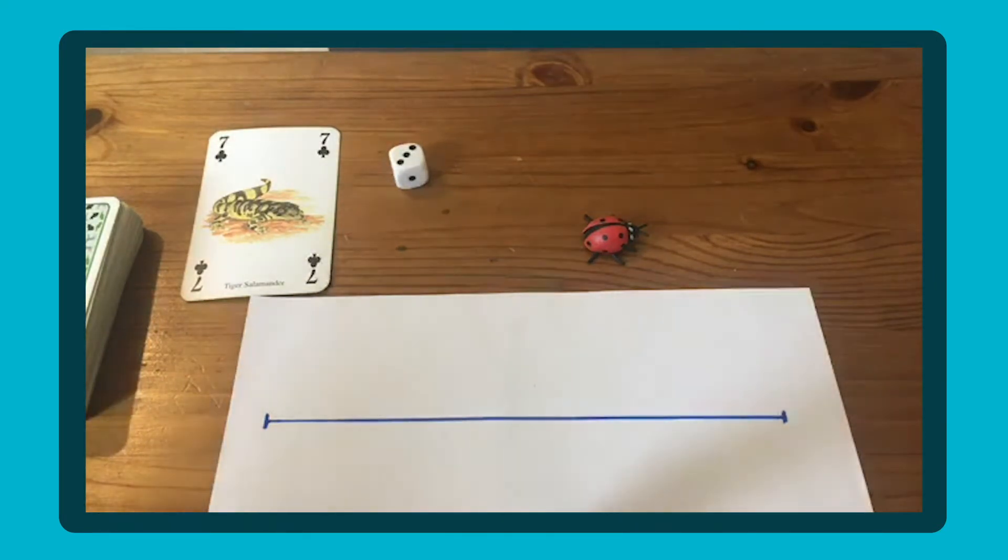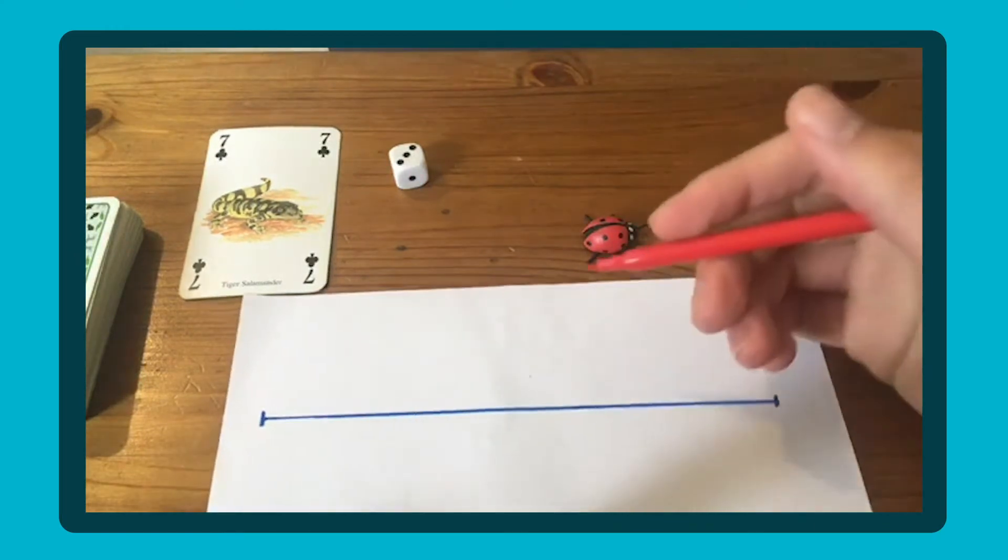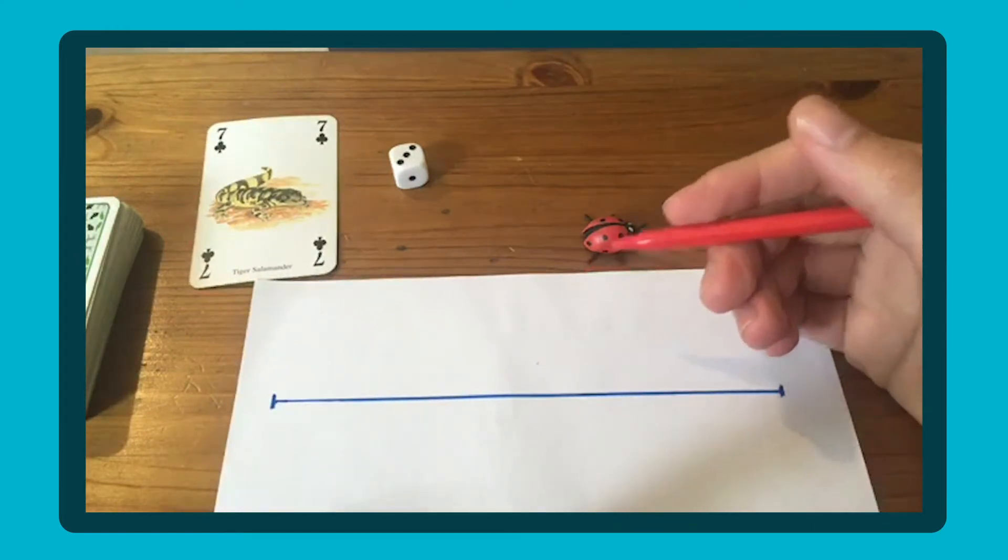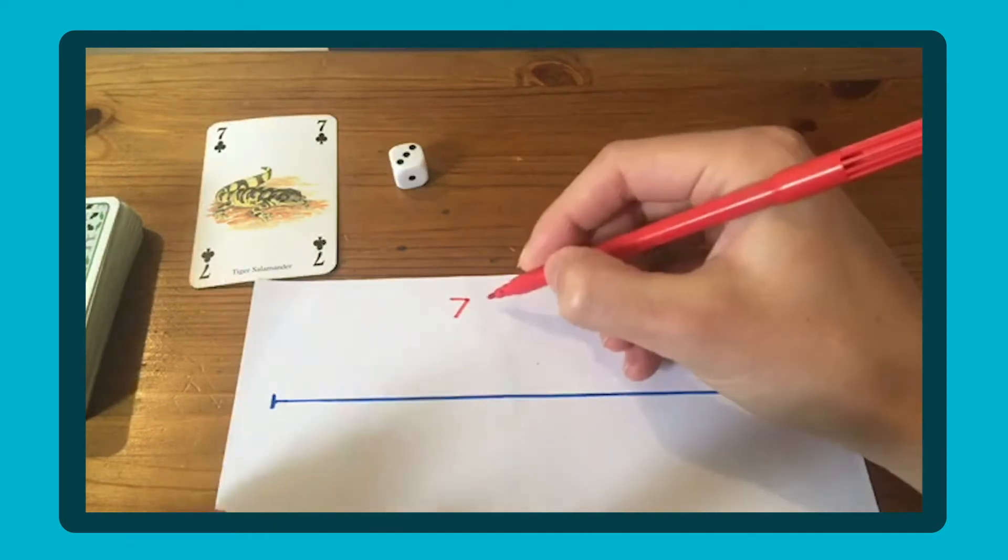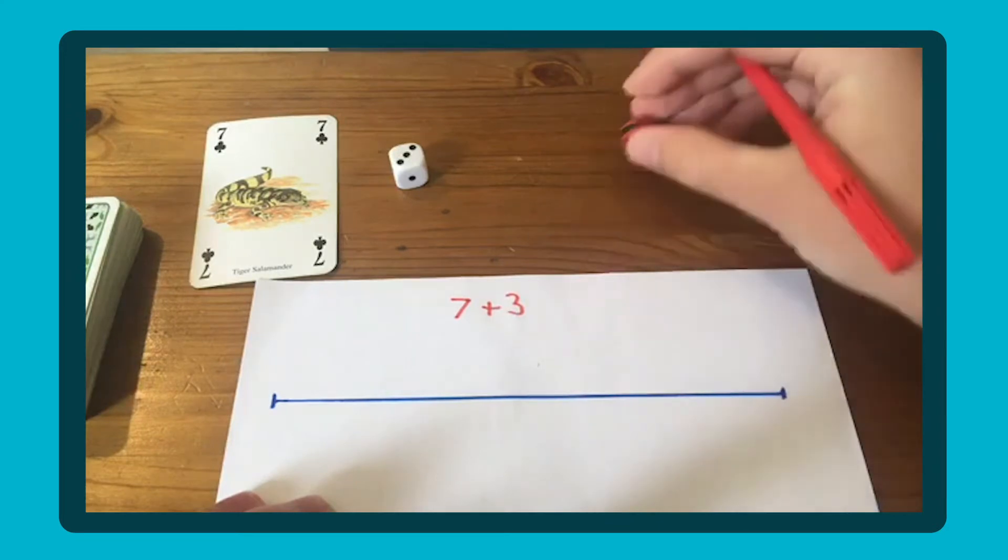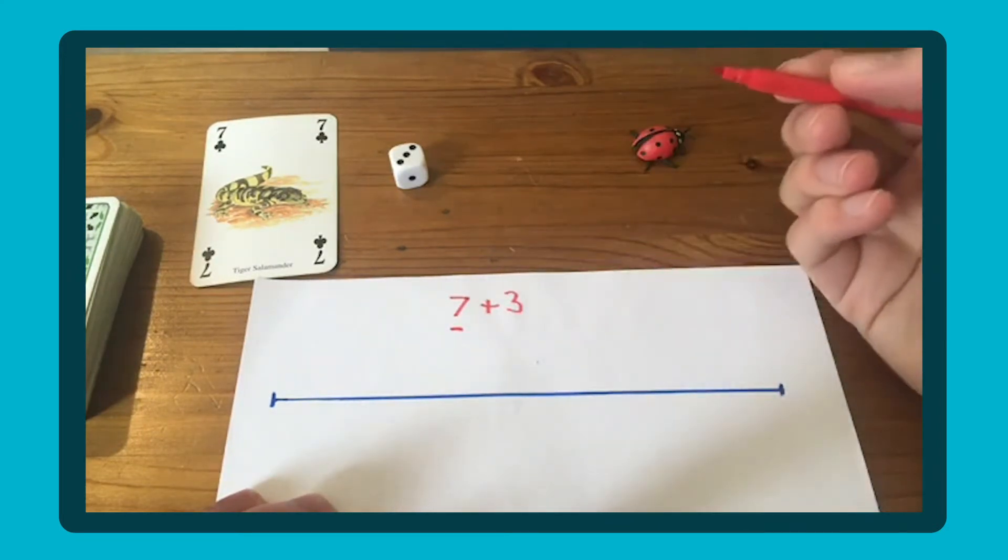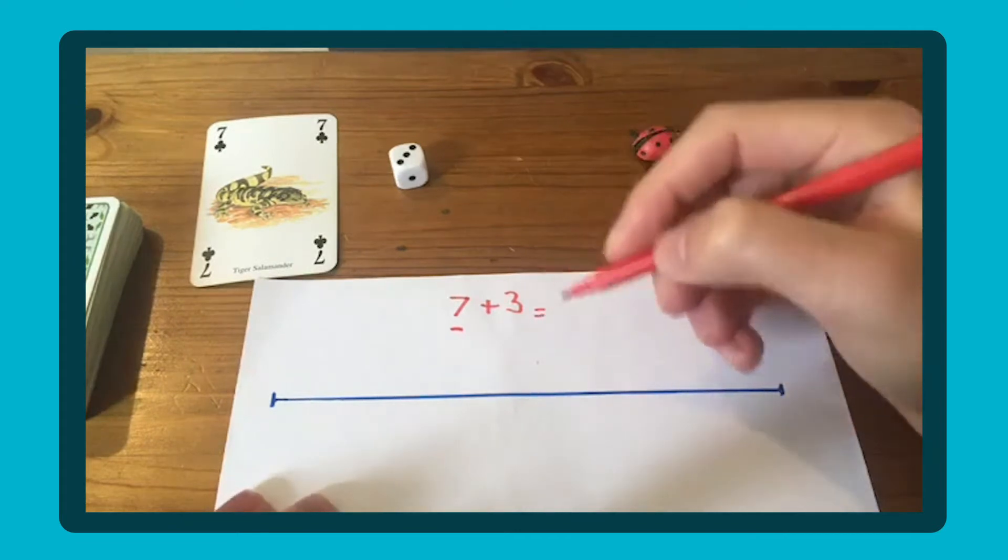Your child may be able to do that in their head or use fingers to help counting on, but you could use a number line as a scaffold. It's good practice to get the child to write out the addition sum.